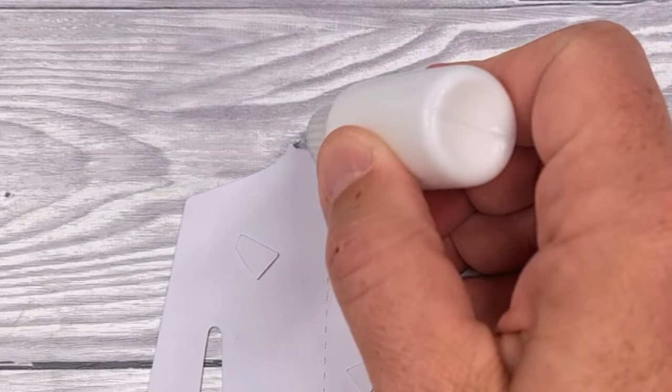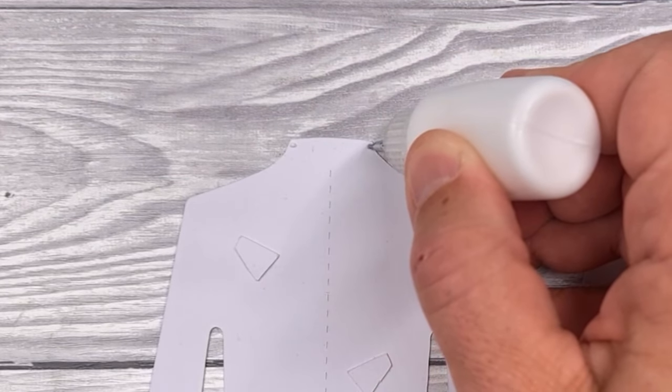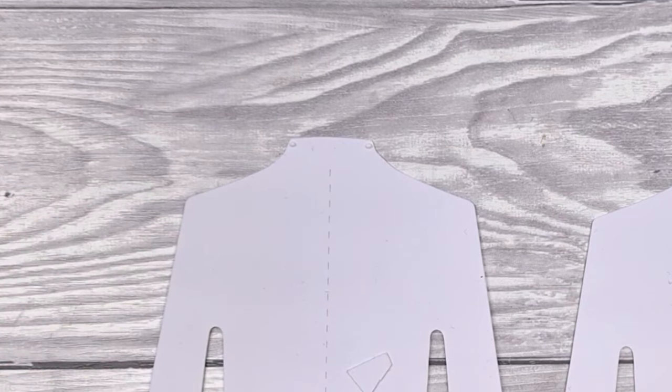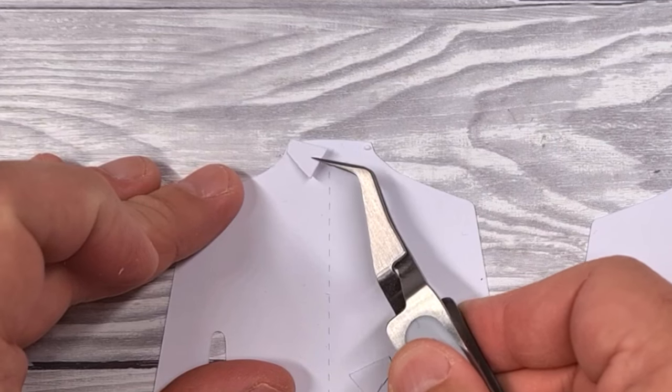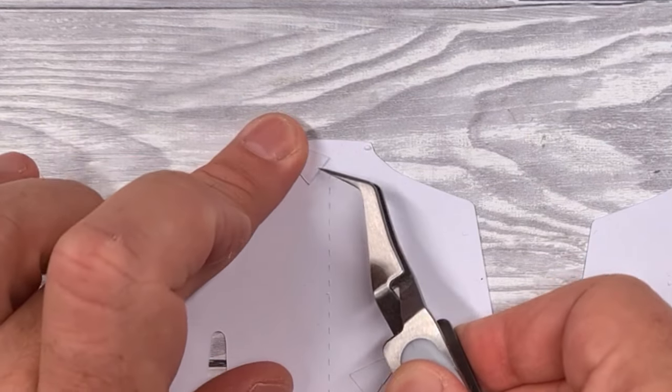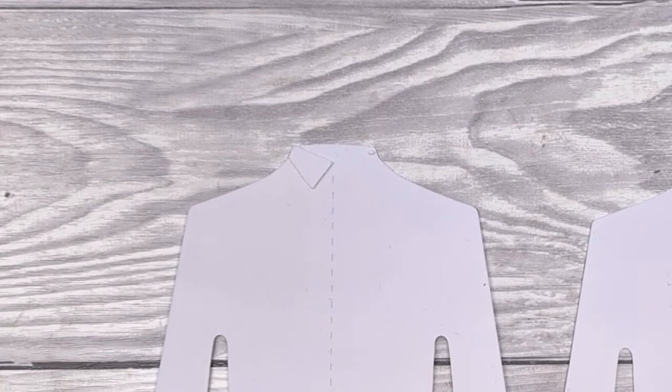For the large collar pieces, you'll just put two dabs of glue, as you're seeing me do here, and then stick them down just at the end points. And this gives you the opportunity to raise up that collar and stick the tie underneath. I'll come back and do that in a second.